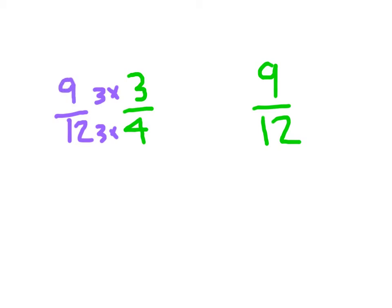3 times 3 is 9, and 4 times 3 is 12, so 3 fourths can be rewritten as 9 twelfths. So in fact, these two are equivalent.